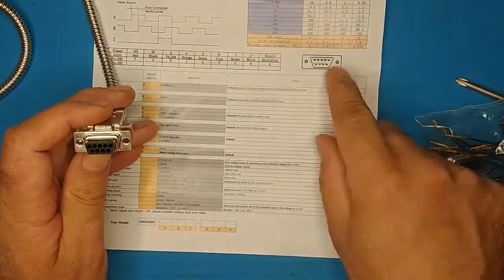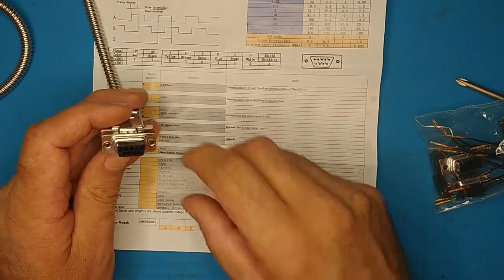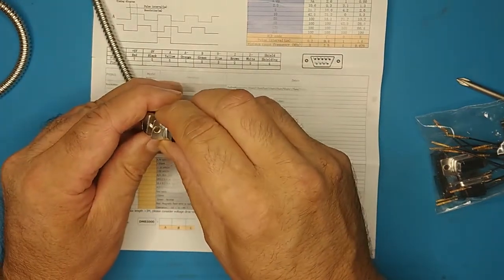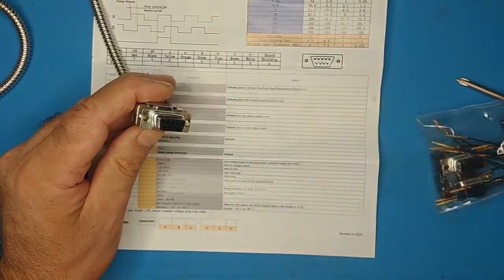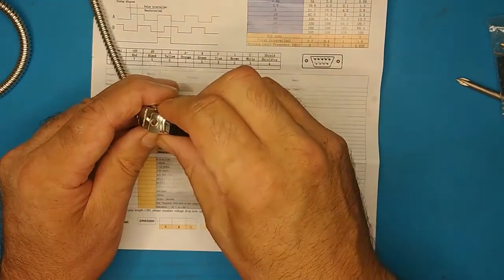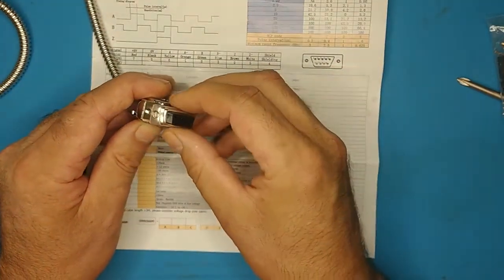When you get the DB9 connector out of the hardware pack for TouchDRO, you can get a little confused, but you can also just plug it in like that and note that this will be pin 1 according to your diagram. Remember, go by your diagram.